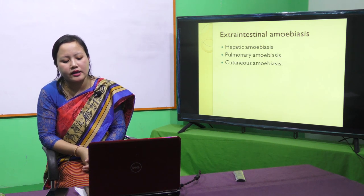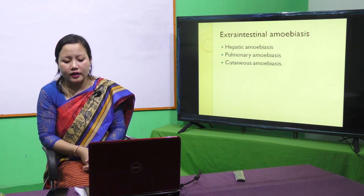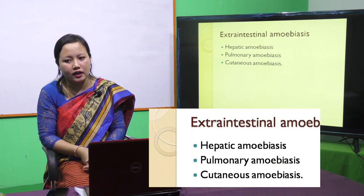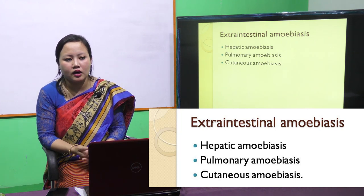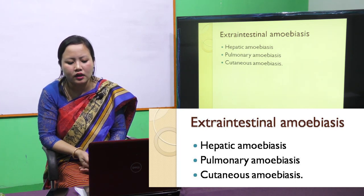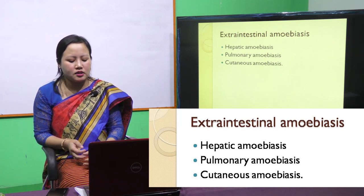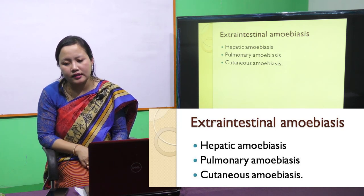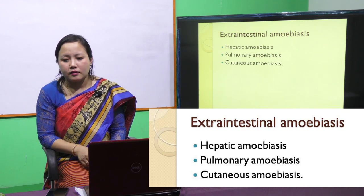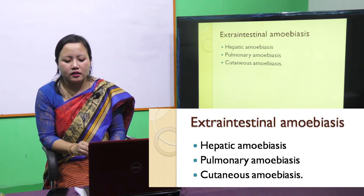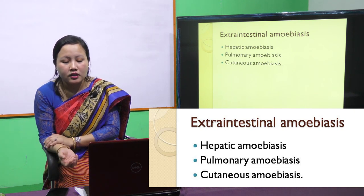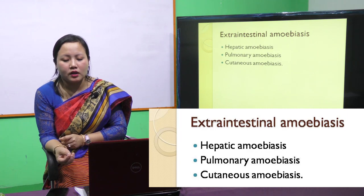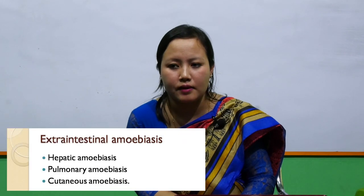Apart from intestinal amoebiasis, when the parasite infects other organs it causes extra-intestinal amoebiasis. Number one is hepatic amoebiasis, where the parasite travels through the bloodstream and infects the liver. Second is pulmonary amoebiasis, where the parasite infects the lungs and the patient produces brown sputum. The last is cutaneous amoebiasis, which is a skin infection.